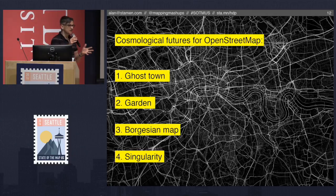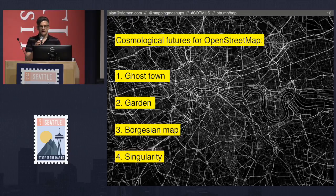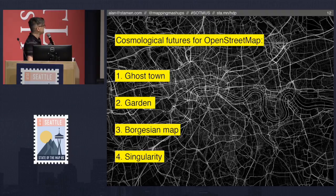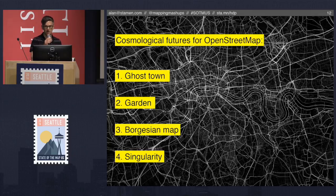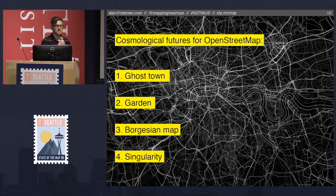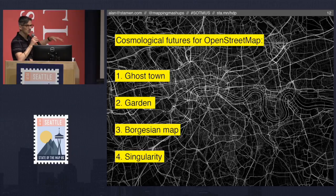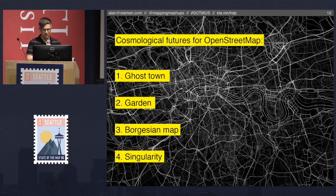So in OSM, these are four possible scenarios — and maybe there's more — that seem to me like they might be analogs of those. The ratio of adding new features and editing those features, ratios of growth of the community versus stagnation — these are all different factors that will go into the cosmological future of OSM.